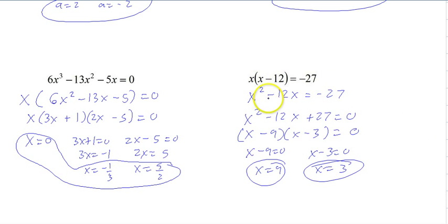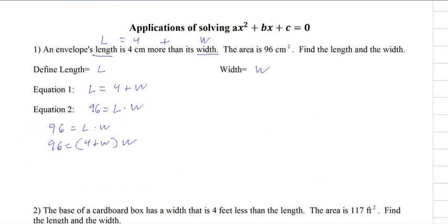It's very similar to what you see here, this one. So we're going to have to distribute, bring over the 96, and then factor and set each equal to 0. So let's try that. Let's distribute. Bring the 96 over.